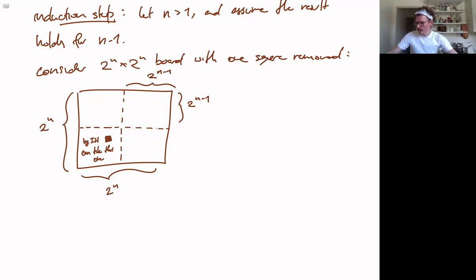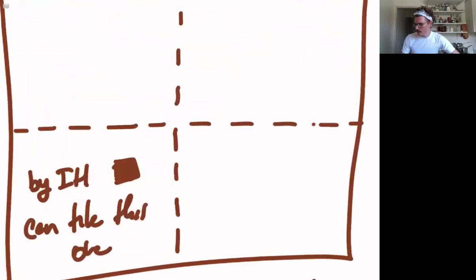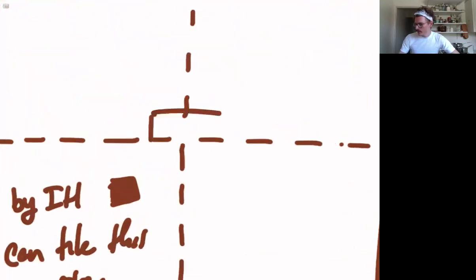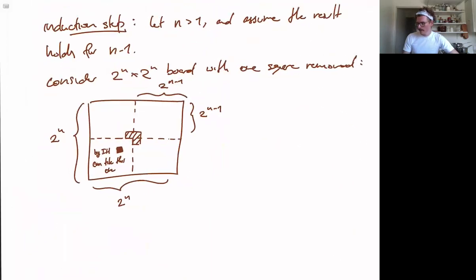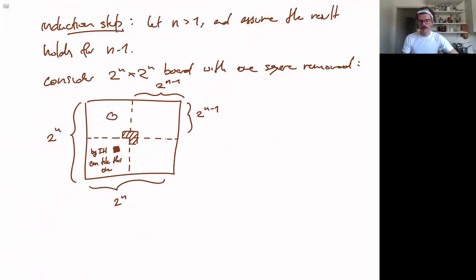And actually, with a little thought, you might have the clever idea to place a single L-triomino that covers one square of each of these boards. So what we mean by that is that say you put an L-triomino right in the middle here, so that it covers one square of this board, one square of this board, and one square of this board, without interfering with this board at all.